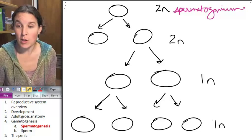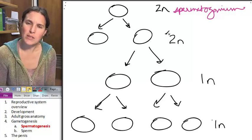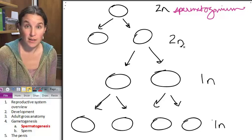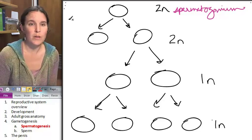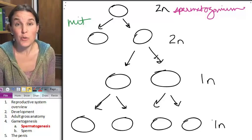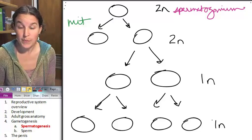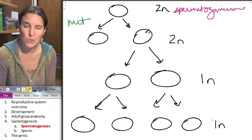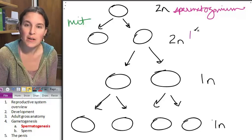This spermatogonium goes through the process of what do you think? This will result in another diploid cell. Do you think that it's going to go through meiosis or is it going to go through mitosis? It's going to go through the process of mitosis and it's going to produce, at the end of going through mitosis once, it's going to produce two identical daughter cells and these guys are called primary spermatocytes.